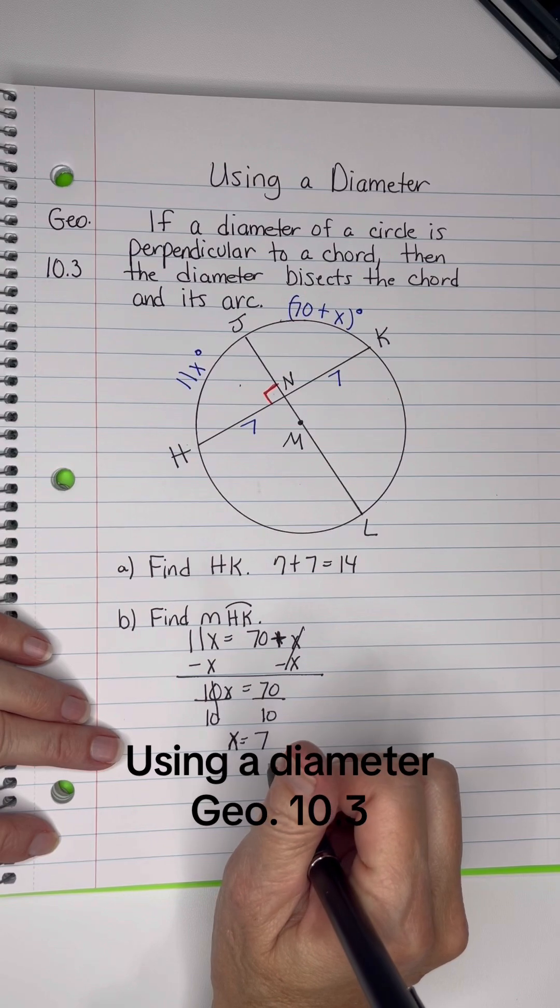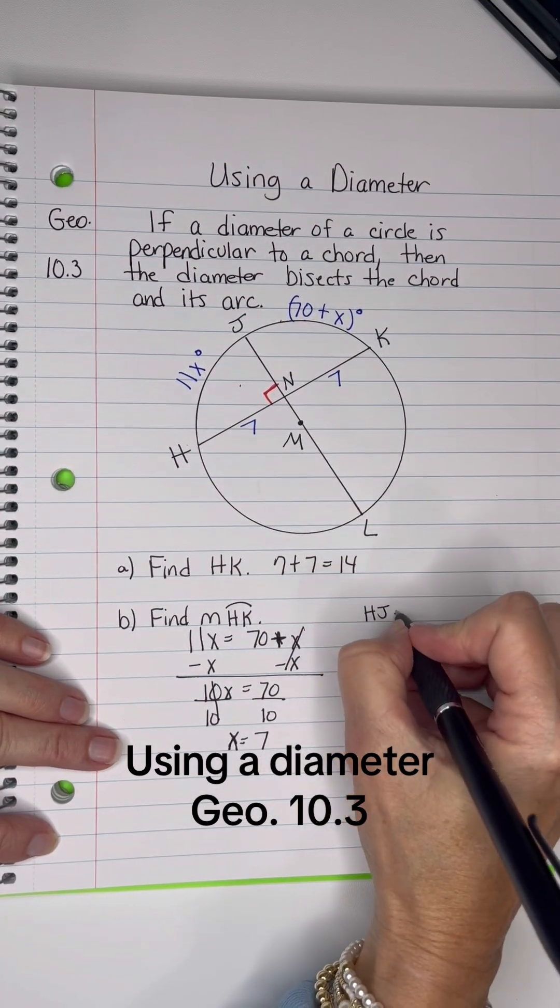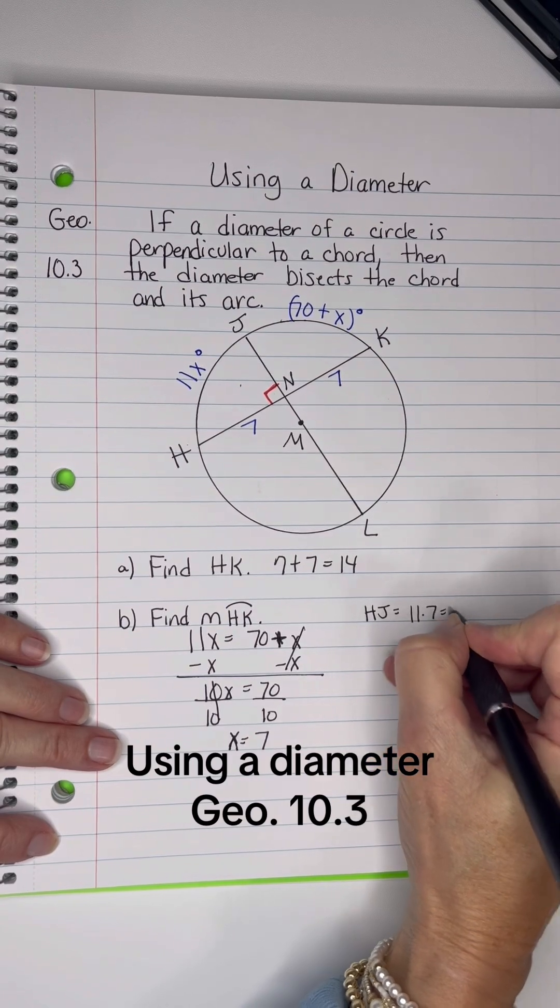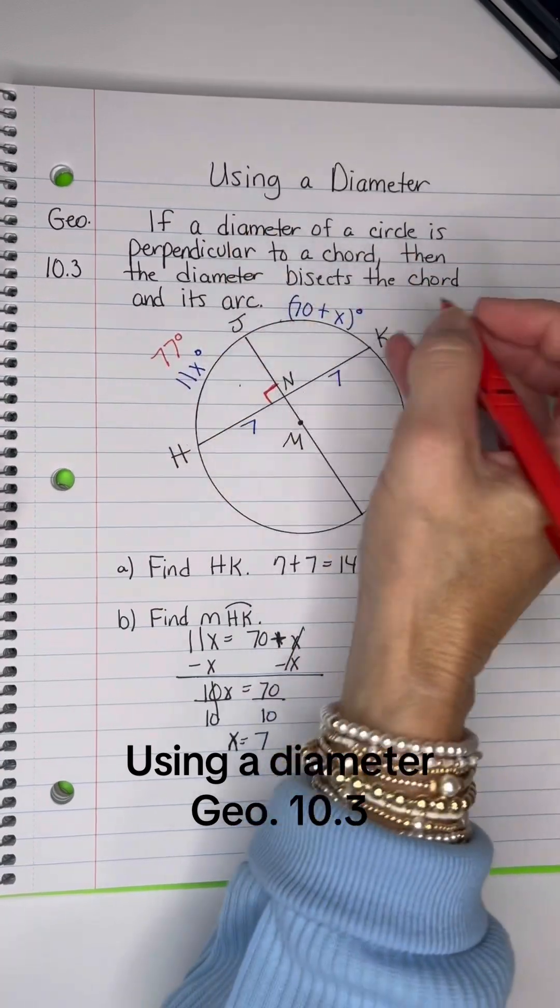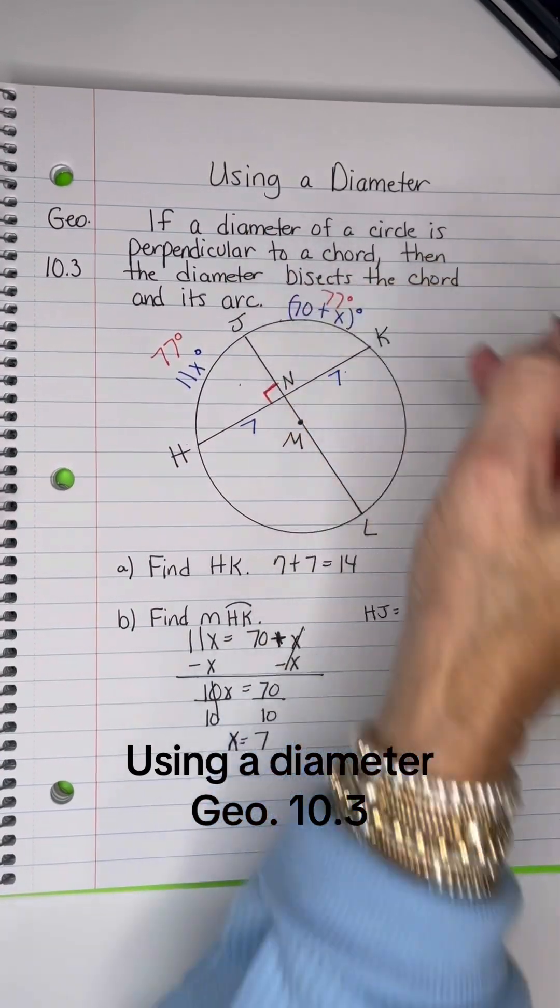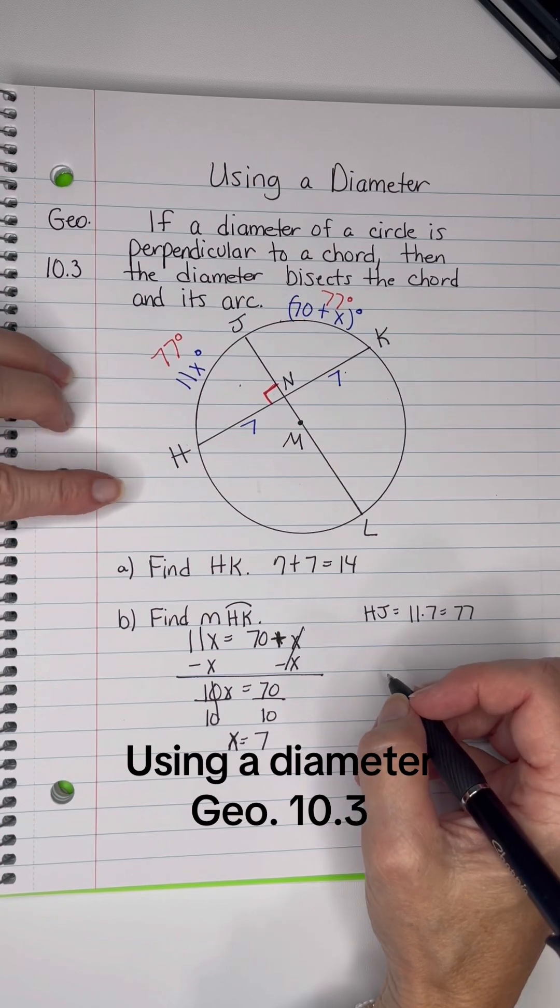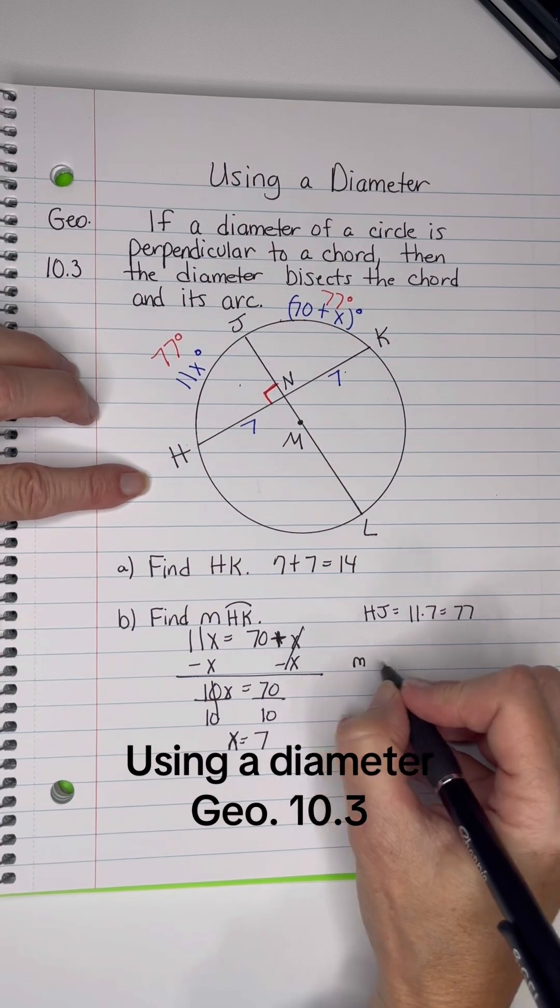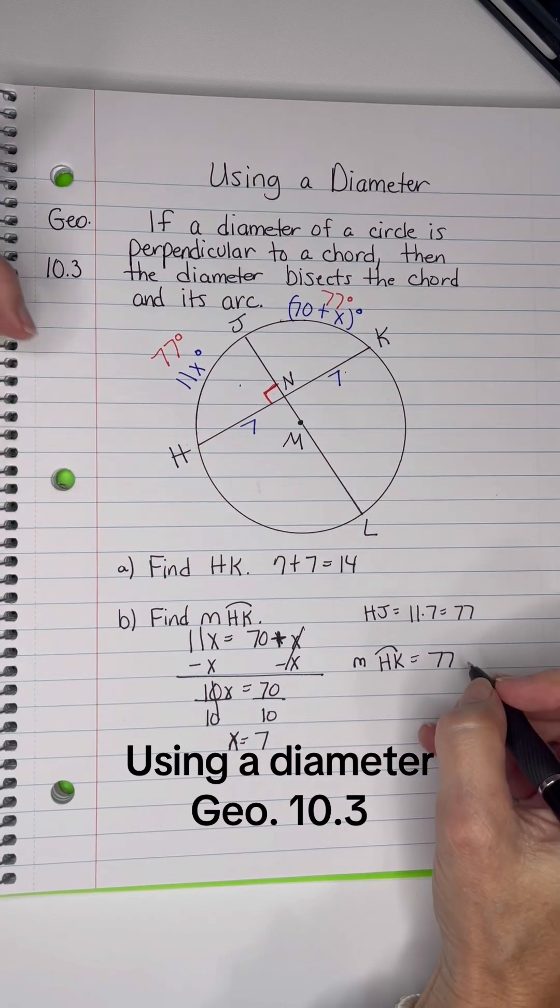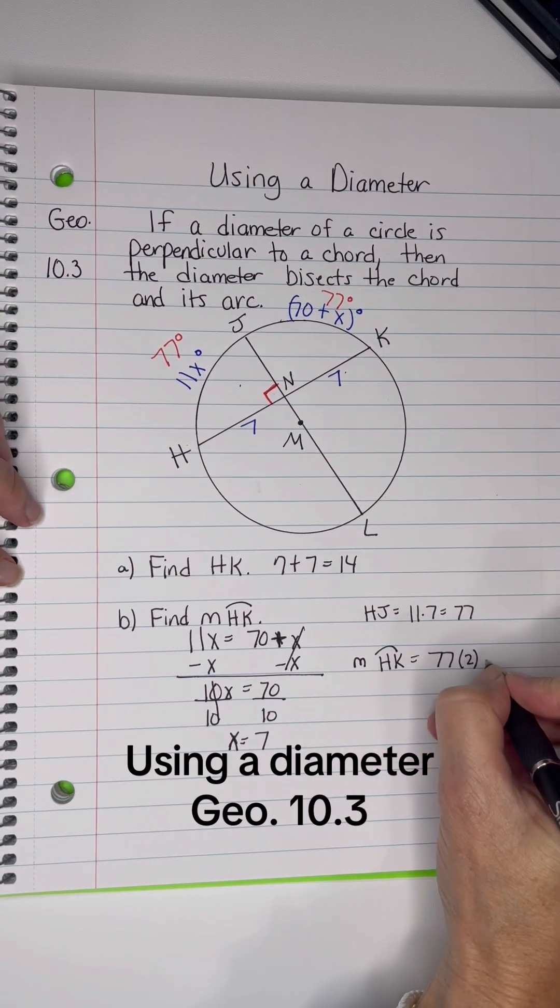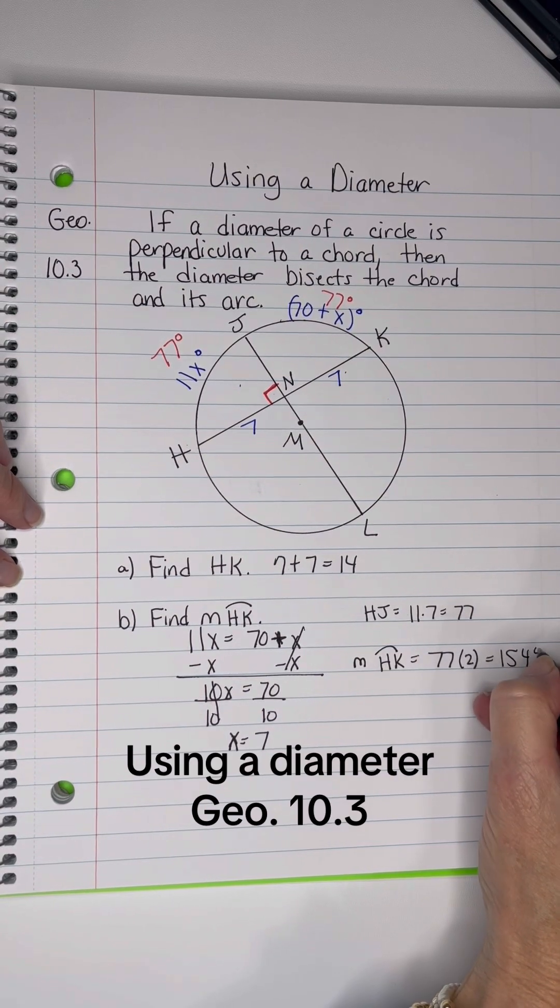Now that means that HJ is 11 times 7, which is 77. So all of this part right here is 77. Since it's bisected, this part is 77. So if I wanted to know the measure of arc HK, I'll just take 77 and add 77, or multiply it by 2, and when I do so, I'll get 154 degrees.